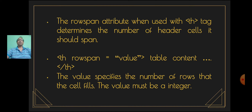The rowspan attribute when used with the th tag determines the number of header cells it can span. The syntax is: th rowspan="value". The value specifies the number of rows that the cell fills. The value must be an integer.